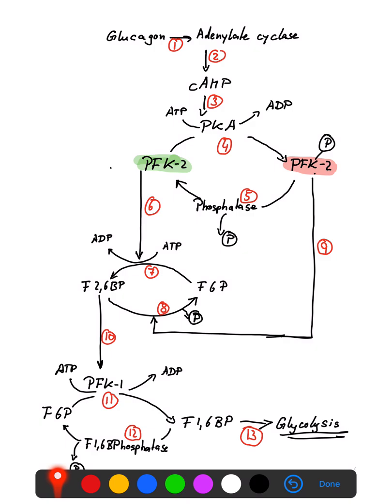Upon signaling from glucagon — which is the hunger hormone of the cell, indicating that there is not enough glucose in the bloodstream — an intracellular enzyme called adenylate cyclase is activated. Adenylate cyclase uses ATP and produces cyclic AMP. This cyclic AMP then activates what is known as protein kinase A. Without cAMP, protein kinase A is inactive, but in the presence of cyclic AMP, protein kinase A becomes active.